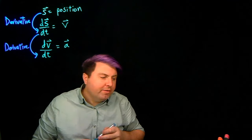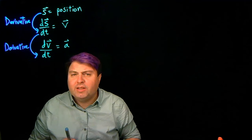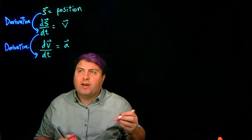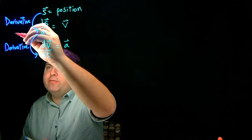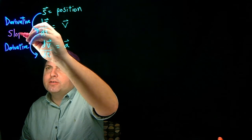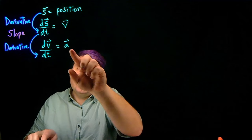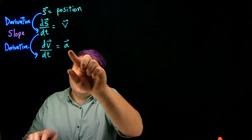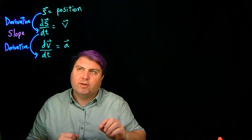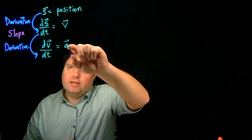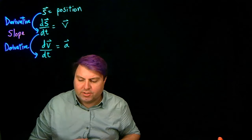Hopefully we feel comfortable about what a derivative is and what a derivative means. What's more important is that when we think of derivatives, we think of slopes. So we can say the acceleration is the slope of the velocity versus time curve, and the velocity is the slope of the position versus time curve.